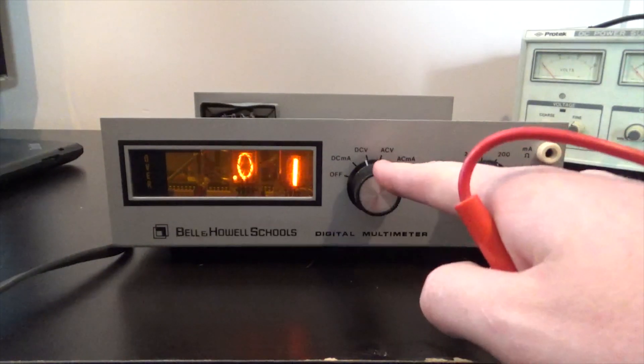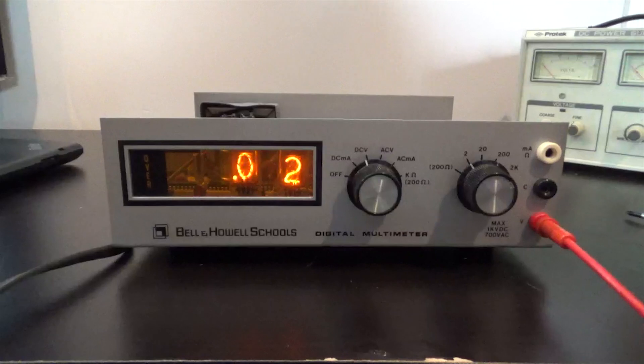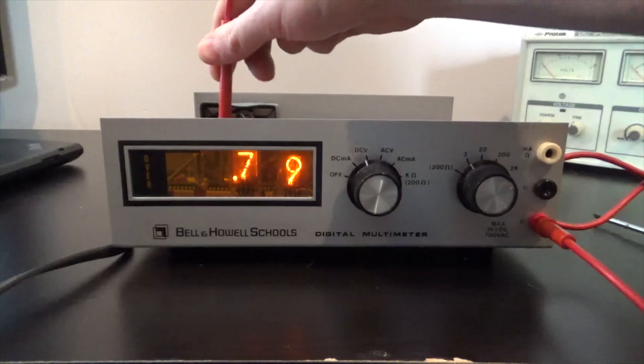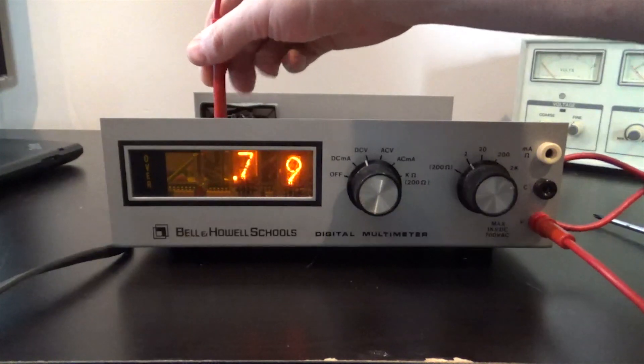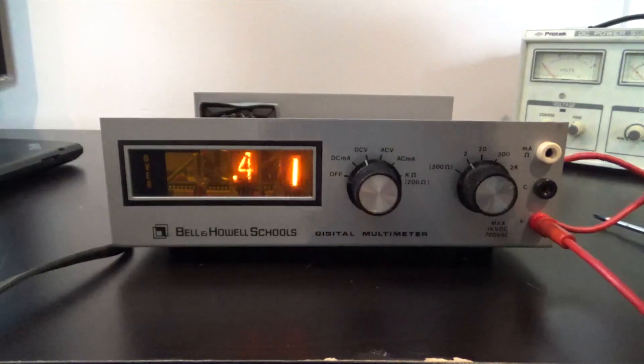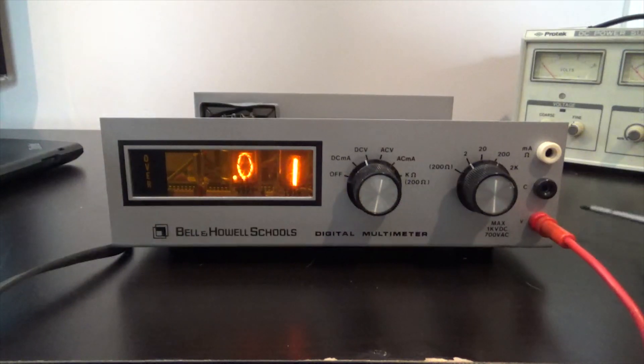So if we're going to test volts DC with the internal test point, it should read 1.79. Well, the one doesn't show up, and I adjusted it to 2.79, and the scale is correct for the manual. So I thought, well, maybe the one is just burnt out.